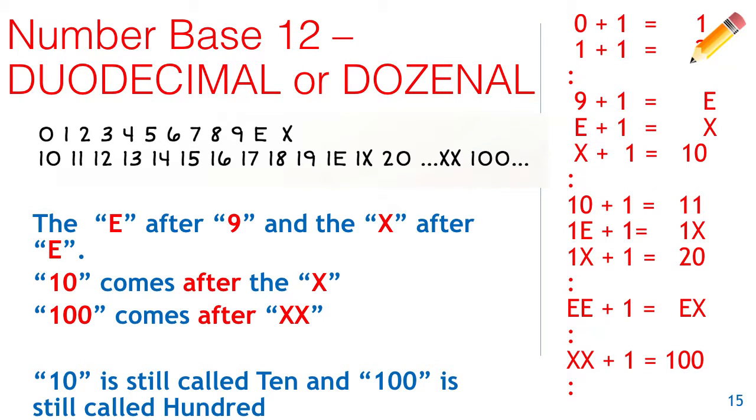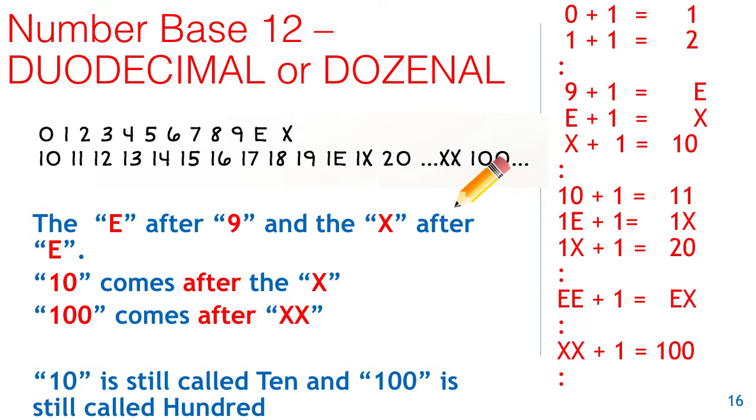You can see in the number system to the right, each time one adds one, what the answer is. One doesn't go to two digits till after nine plus one being e, and e plus one being x, and then x plus one is 10. But note, 10 is still called ten, and 100 is still called a hundred.